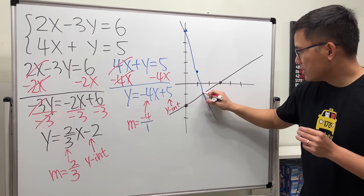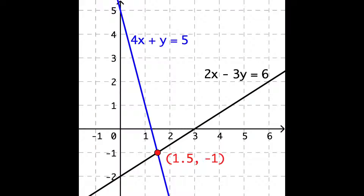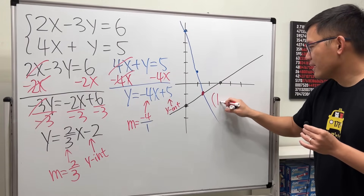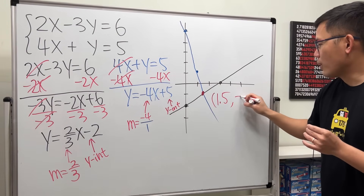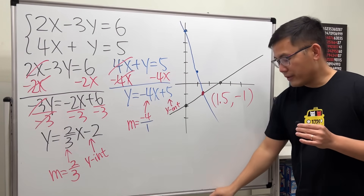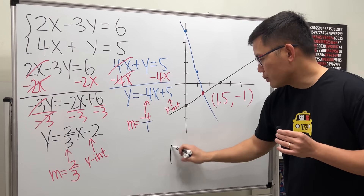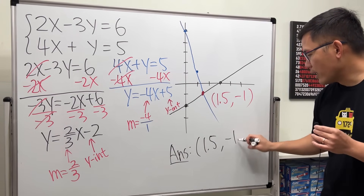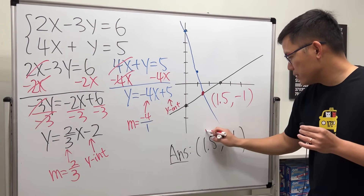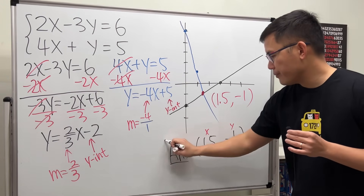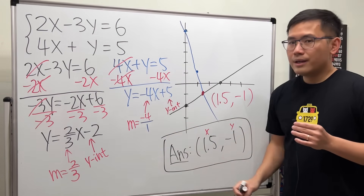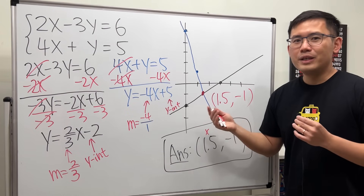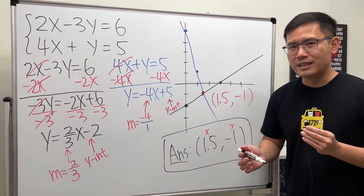As we can see, this is our point of intersection. So the answer for this system of equations is 1.5, negative 1. This is the x value and this is the y value. But sometimes, if the answer is like at 1.4 or 1.7, it would be hard to see. That's why we have other methods as well.